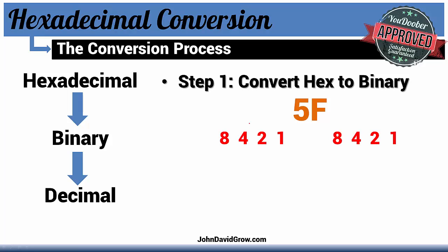So here we have 5, and we're going to plug that in with zeros and ones. 4 plus 1 equals 5, so we're going to put a 1 here and a 1 here, and fill the rest in with zeros. Now F, as you remember, equals 15. Well, 8 plus 4 plus 2 plus 1 equals 15, so these get all 1s.